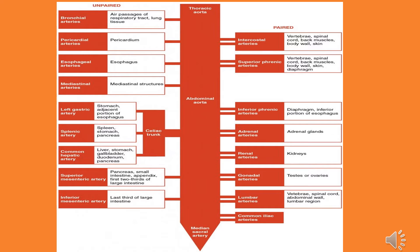Abdominal aorta branches include: inferior phrenic artery to the diaphragm and inferior portion of the esophagus; adrenal arteries to adrenal glands; renal arteries to the kidneys; gonadal arteries to the testes and ovaries; lumbar arteries to the vertebra, spinal cord, abdominal wall, and lumbar region; and then the common iliac arteries to the lower body.